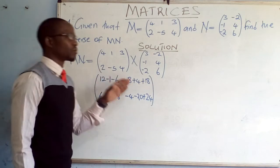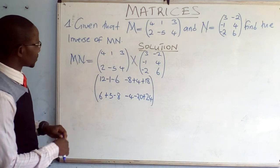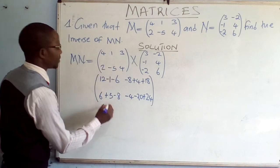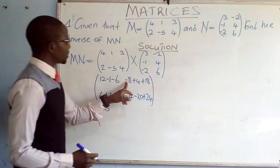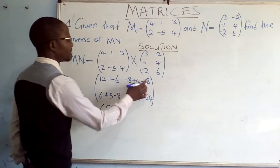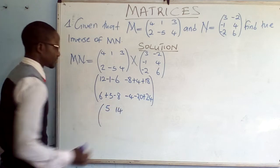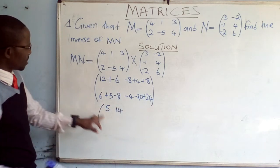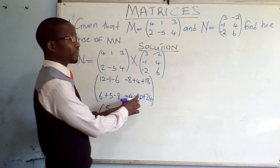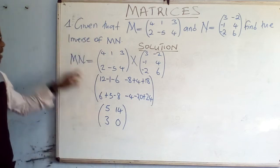At this point we have followed the rule of row by column. Now we have to add and subtract where necessary. So 12 minus 1 minus 6 gives us 5 in that position. Negative 8 plus 4 plus 18 gives us 14. Then 6 plus 5 minus 8 gives us 3. Then negative 4 minus 20 plus 24 gives us 0. So at this point we have found MN.